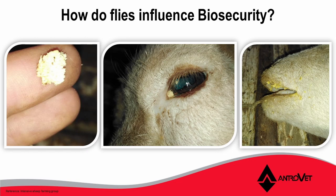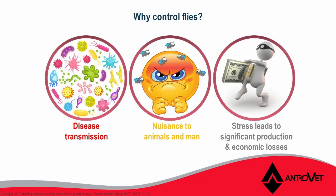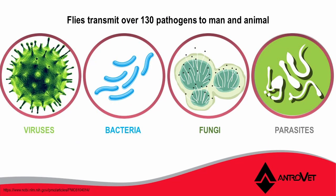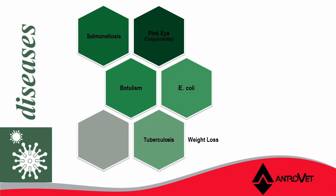Another factor with a big impact on biosecurity on farm is the control of flies. We need to understand why we control flies — because they transmit diseases, they're a nuisance to animals and men, and the stress leads to significant production and economic losses. Flies transmit over 130 pathogens to man and animal, including viruses, bacteria, fungi, and parasites. Some of the diseases that flies cause include salmonella, botulism, pink eye, and tuberculosis — all of which can lead to weight loss and production loss.